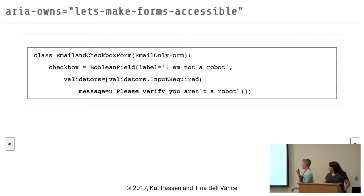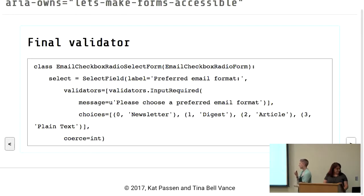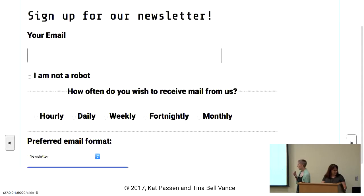Now we're adding a checkbox — we give it a label asking 'Are you a robot?' as our simple CAPTCHA, just checking that somebody did check it. Then we build radio buttons: a RadioField asking 'How often do you want to receive mail from us?' with choices that correspond to back-end values and front-end labels. And now we're putting a select field on top of that, which looks similar to radio buttons but builds a select box instead.